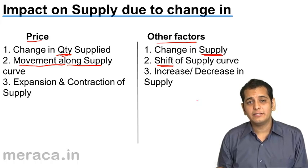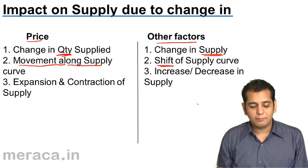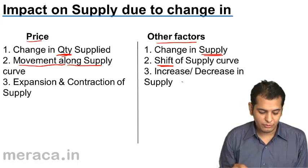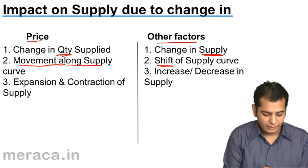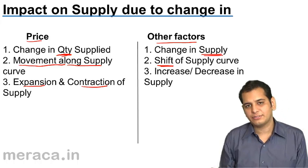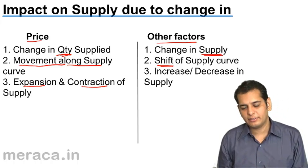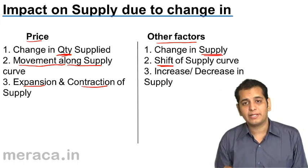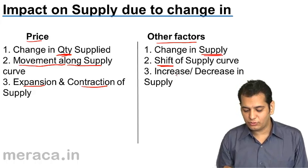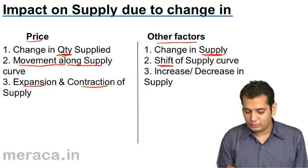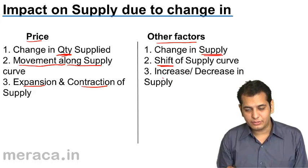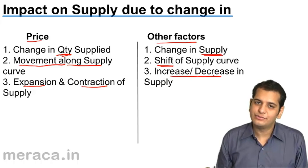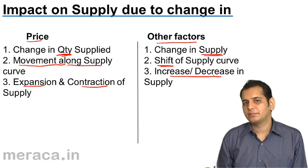And finally, when supply changes because of price, we call it expansion and contraction of supply. However, when supply changes because of other factors, we call it increase or decrease in supply.